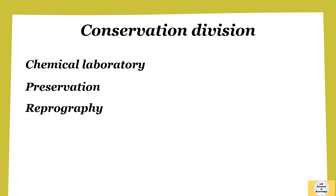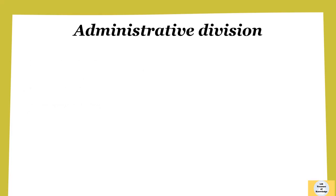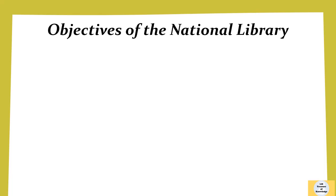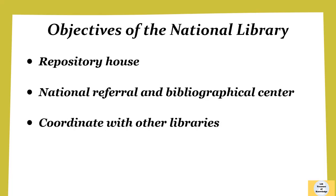The third and last division is the Administrative Division, which is concerned with Accounts, Bins, Cash, Security and Public Relations. The objectives of the National Library are: first, to work as a repository house by preserving ancient documents and manuscripts; second, to work as a national referral and bibliographical center; and third, to coordinate with other libraries in the country to develop a National Library system.